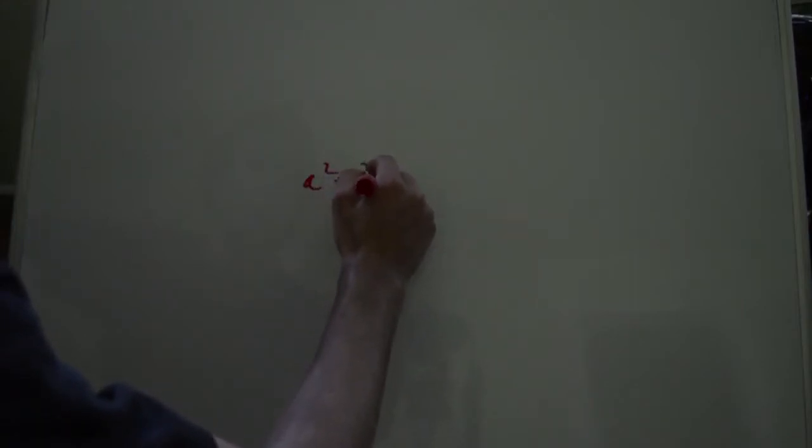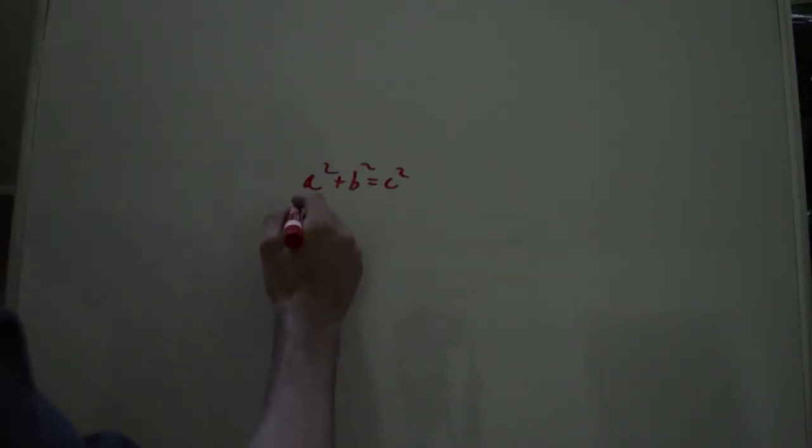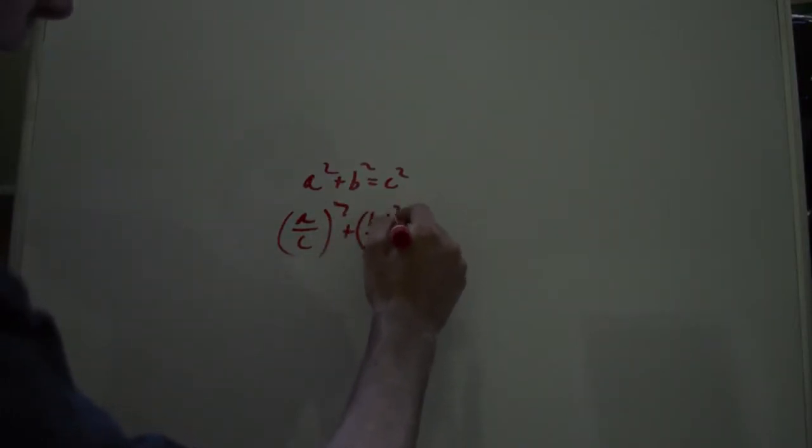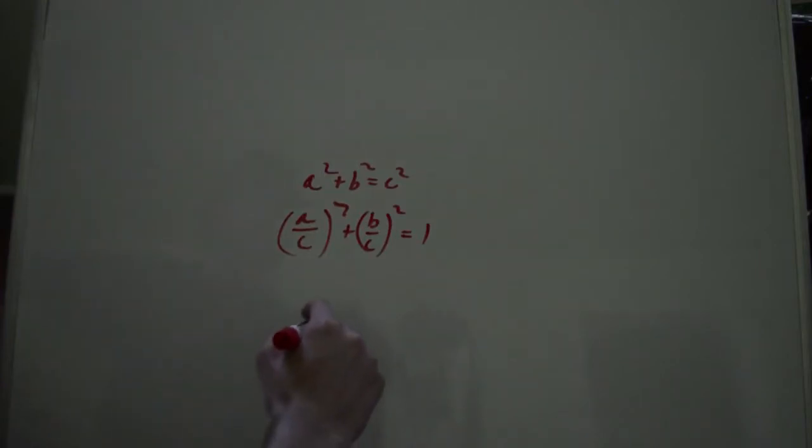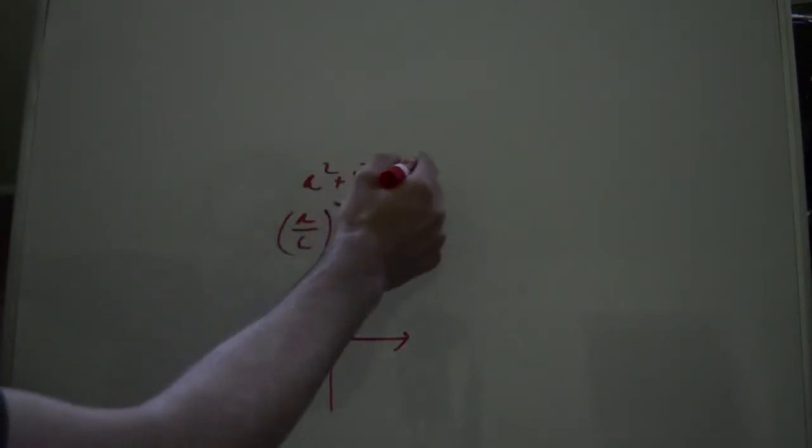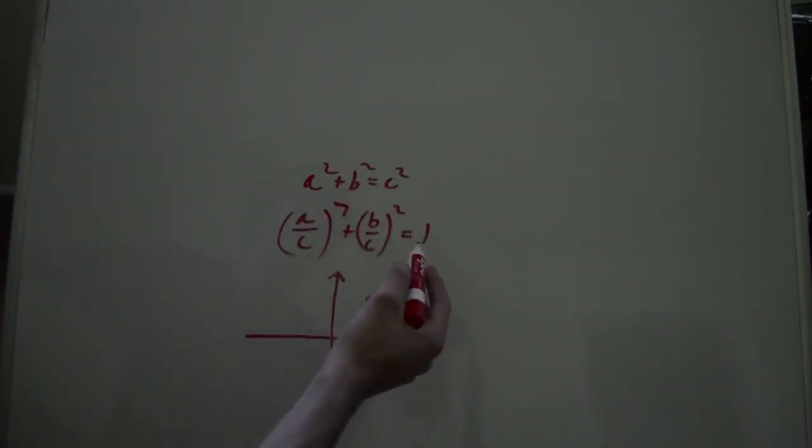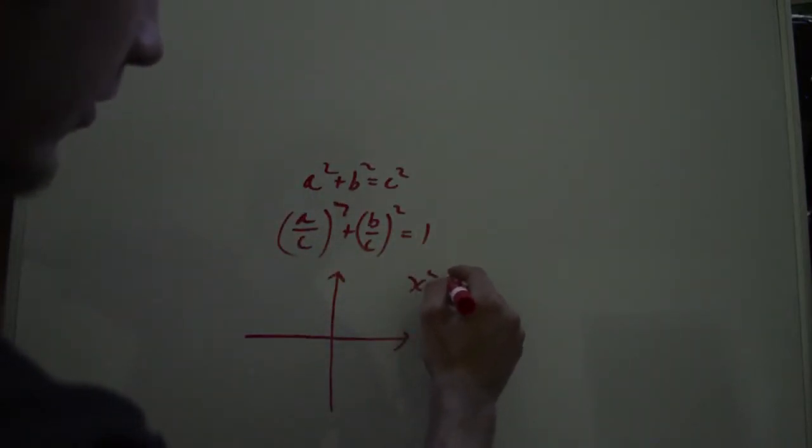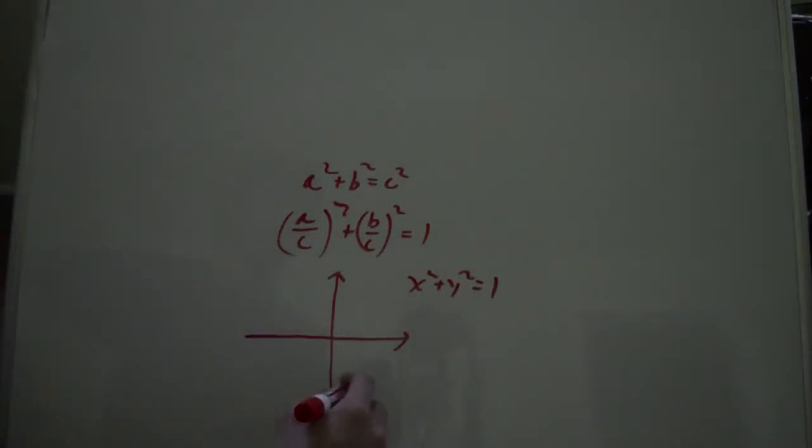So how do you go about finding these things? Well, the typical approach is you start with the Pythagorean theorem. So a squared plus b squared equals c squared. And you divide both sides by c squared. So you get a over c squared plus b over c squared equals 1. And since x squared plus y squared equals r squared is the equation for a circle, it's the exact same thing as this. So if you have x squared plus y squared equals 1, then you have a circle with radius of 1.